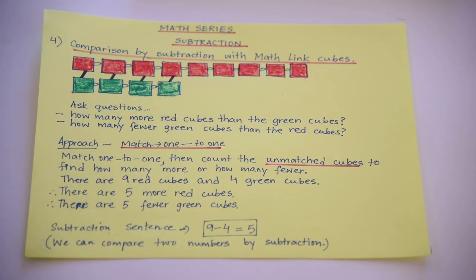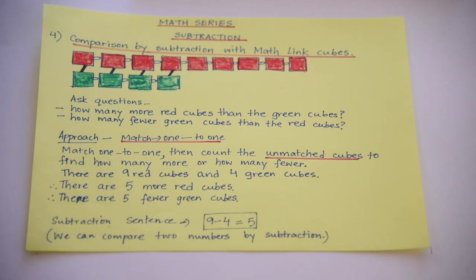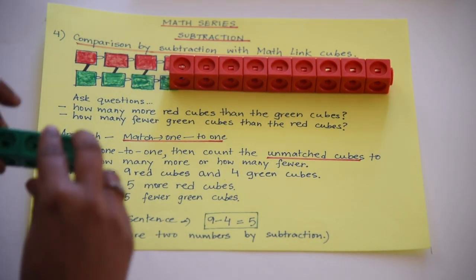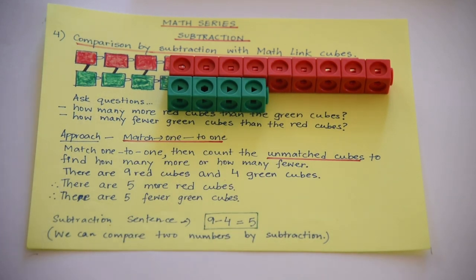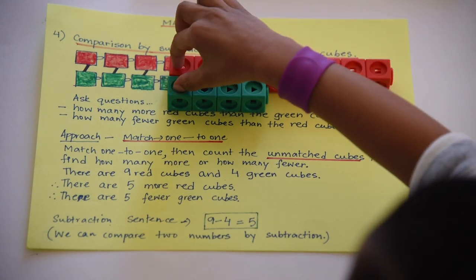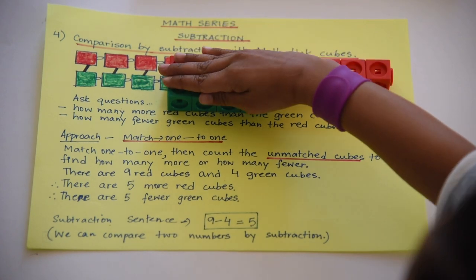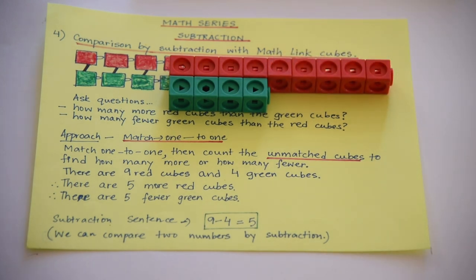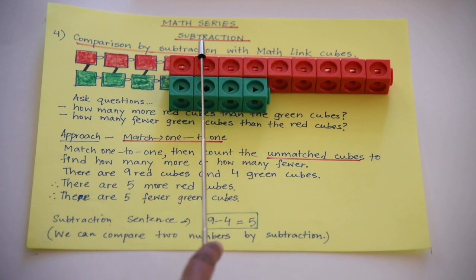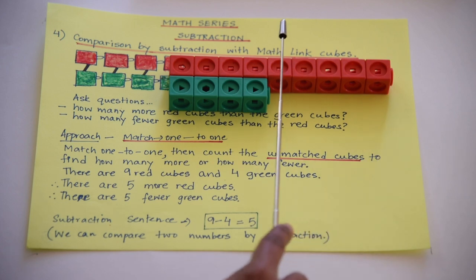Now let's learn how to compare two sets of objects or two numbers with the help of subtraction. Ishaan, you have nine red cubes and I have four green cubes. Who has more? Me. How many more? Five. You match one to one — four cubes are matched and there are five unmatched cubes, and that is the answer. The subtraction number sentence is nine minus four equals five. Who has fewer? You. How many fewer? Five fewer — the same way, four are matched and the five unmatched is the answer.